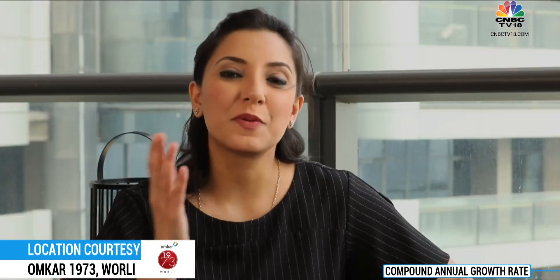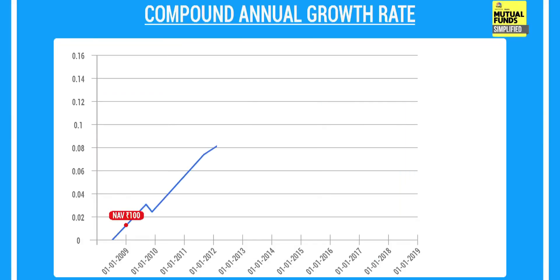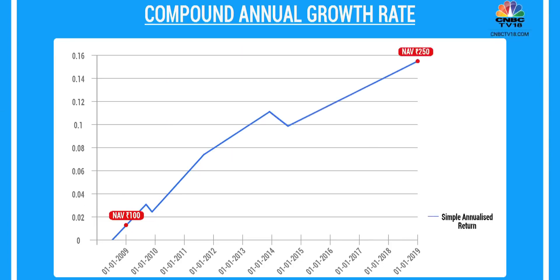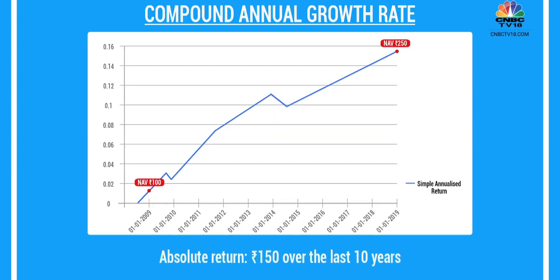Let's say you want to invest in a fund and its performance over the last ten years looks somewhat like this graph. As you can see, there are highs and lows the fund has experienced, and its NAV has gone from ₹100 to ₹250 — that's a 150% total gain or absolute return over ten years. The simple annualized rate is 250 minus 100 divided by 10, which is 15%. But it would not be right to assume you've compounded your money at 15%, because if it truly compounded at 15%, the value would have actually grown to ₹404.